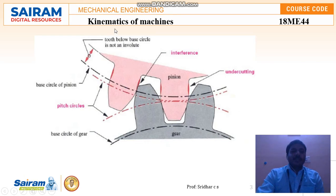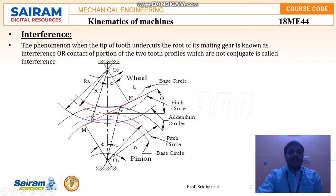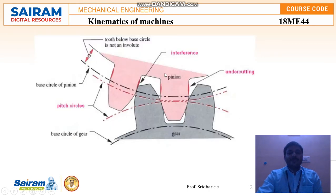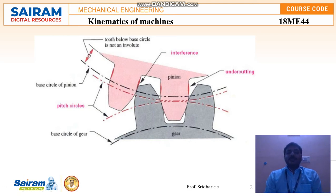Whenever these two gears are mating at one particular point, both gears will be coinciding along the tangential line — that is the portion where there is continuous contact. This interference analysis helps determine how many teeth should be present to avoid interference. When the gear is completely coinciding, that is what we call undercutting, and that is the portion where we see interference.